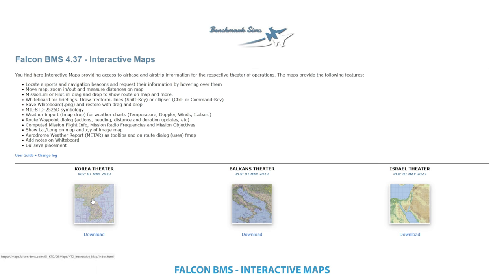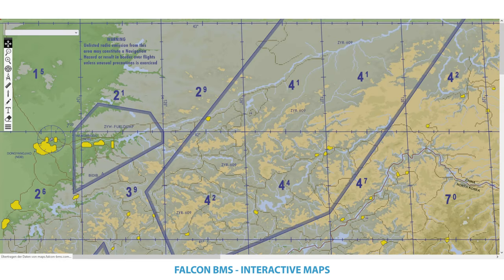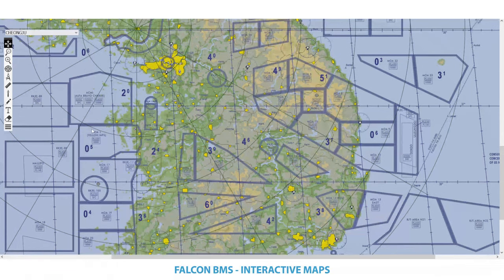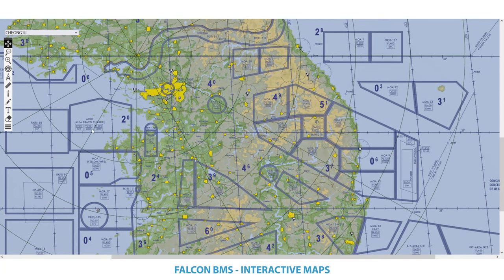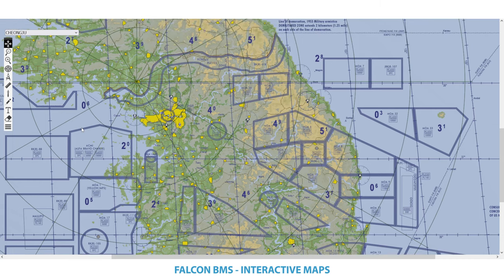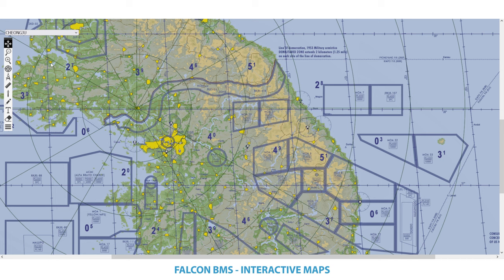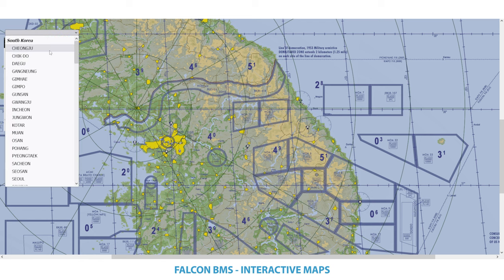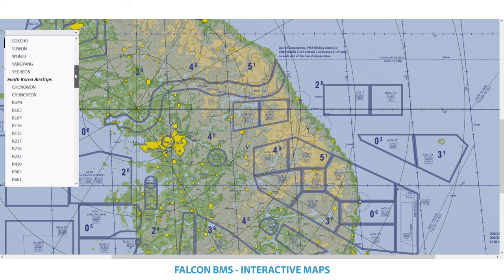Just to show you some features and possibilities, let's use KTO for our test run here. If you want to open a theater, you just click on this little image and you basically land on the KTO interactive map. Let's take a quick overview of what we can see here — the basic features and maybe some fun stuff as well. When I started, I wanted to get access to the airport information quickly, so development goes from the basics.